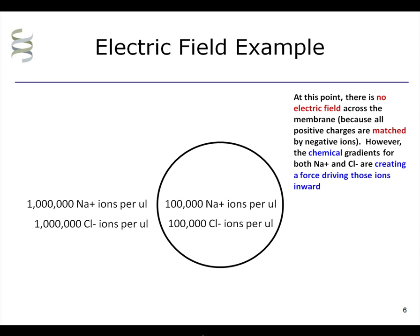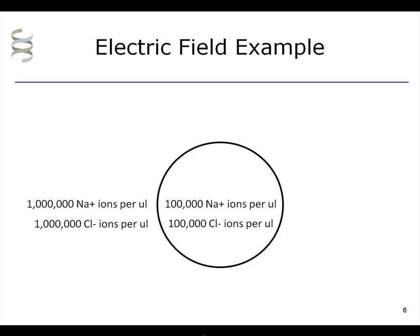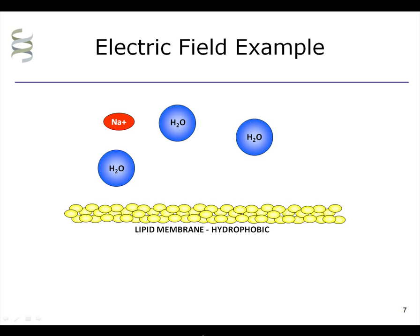However, the chemical gradient for both sodium and chloride are creating a force driving those ions inward. Normally, charged ions do not go through a cell membrane, because charged ions are hydrophilic, while much of the membrane is hydrophobic and impenetrable to charged ions.